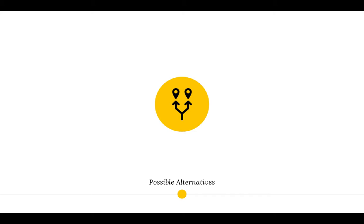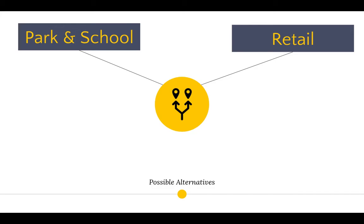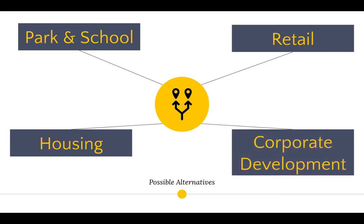Third step: list the alternatives. Cities have a few main options when it comes to land. The four main ones considered here were: educational/institutional — a park and school; retail development — stores the community can shop at; housing, because every city needs housing for its citizens; and corporate development, which is office space. Industrial doesn't really work in this case because of the environmental area just to the south.